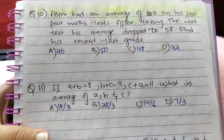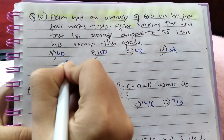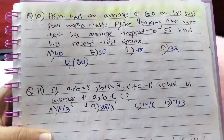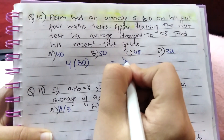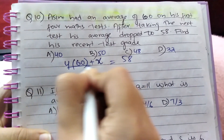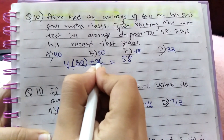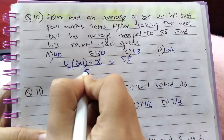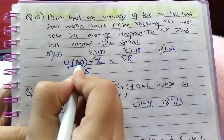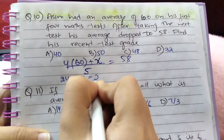Question number 10: Awesome had an average of 60 on his first four tests. After taking the next test, his average dropped to 58. Let the next test score be x. The total number of tests is 4 plus 1, which is 5. So 4 multiplied by 60 is 240 plus x, and 5 multiplied by 58 is 290.